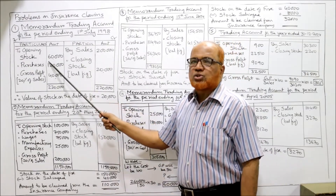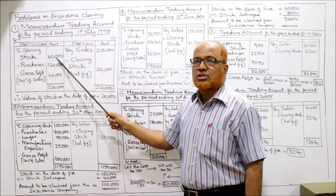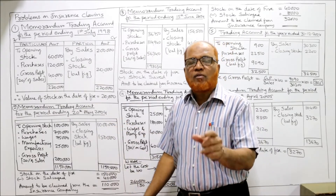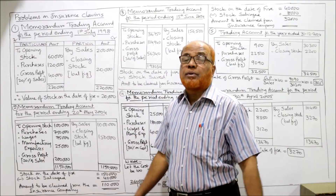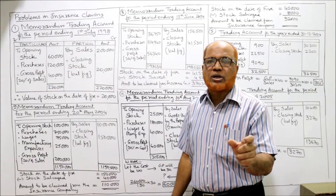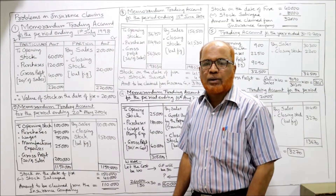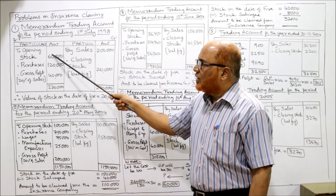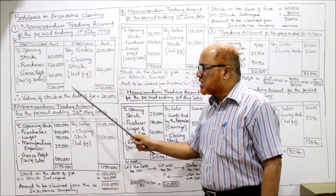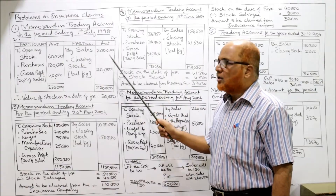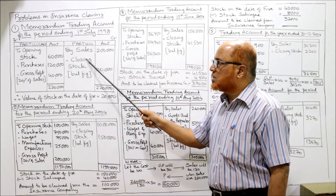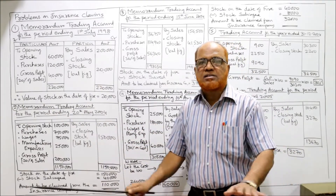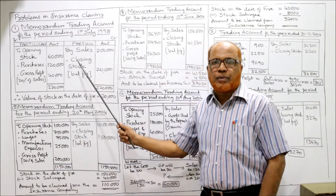On the debit side: opening stock 60,000, purchases 1,20,000, and gross profit 20% of sales (2 lakh × 20% = 40,000). The debit side total is 2,20,000. Subtracting sales of 2 lakh from 2,20,000 gives a balancing figure (closing stock) of 20,000. Therefore, the value of stock on the date of fire is 20,000. Very simple first problem.